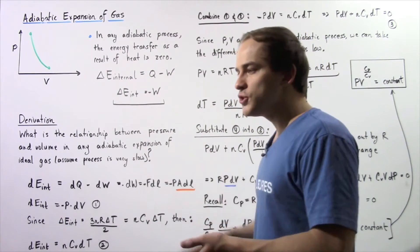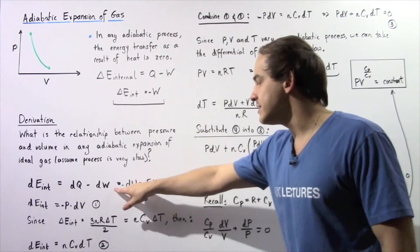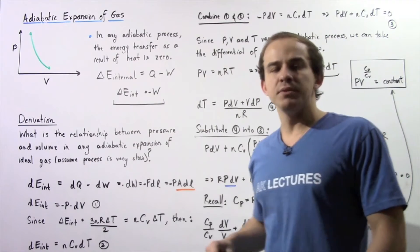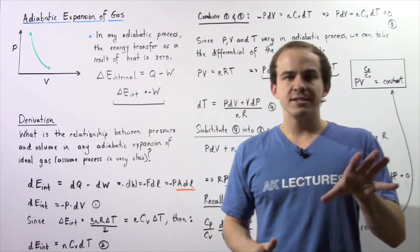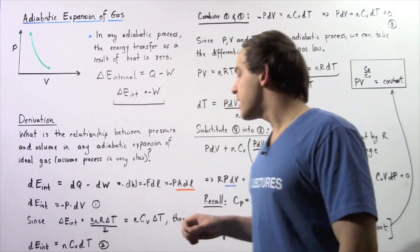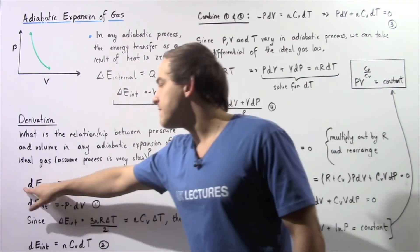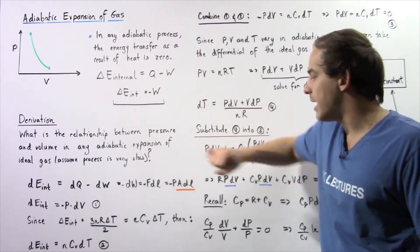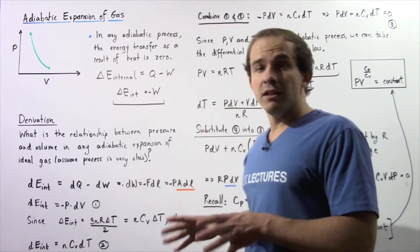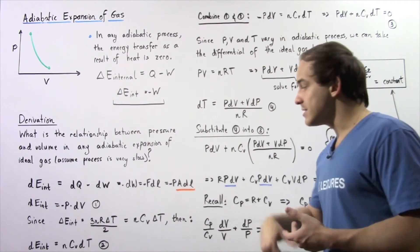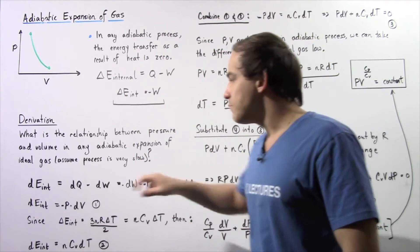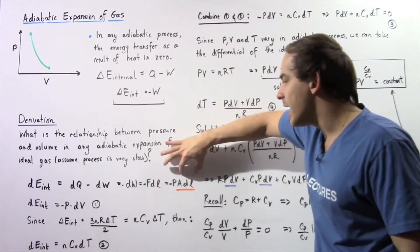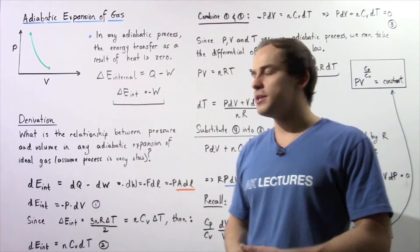Recall that work equals force times displacement, so the negative dW equals negative force times infinitely small displacement dl. Force itself equals pressure times area, so we replace force with P times A. Therefore, dE_internal equals negative P times A times dl. Since A times dl is simply the infinitely small change in volume, we arrive at dE_internal equals negative P dV. We call this equation one.